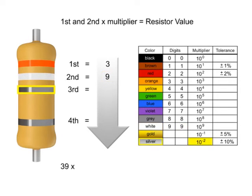The third band is silver, so we multiply the first two numbers by 10 to the negative second power, or .01. In this instance, we would take the 39 and move the decimal point two places to the left, resulting in a value of .39 ohms.